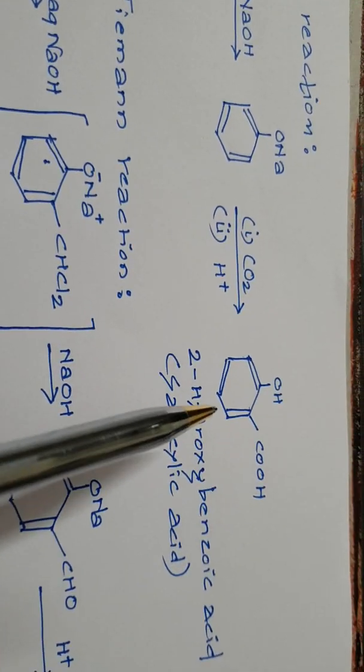In Reimer-Tiemann reaction we have phenol which is made to react with chloroform in the presence of aqueous sodium hydroxide to give you an intermediate over here. This further is made to react with sodium hydroxide to give you this particular product. Look at it, in place of H now you have Na over here as you can see.